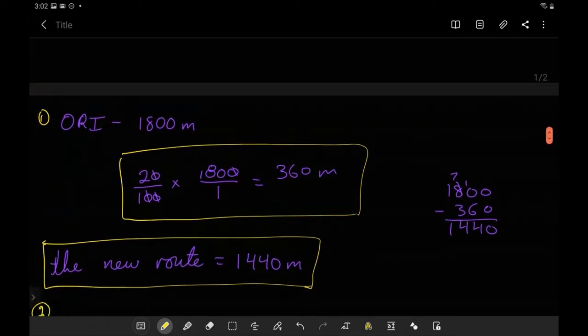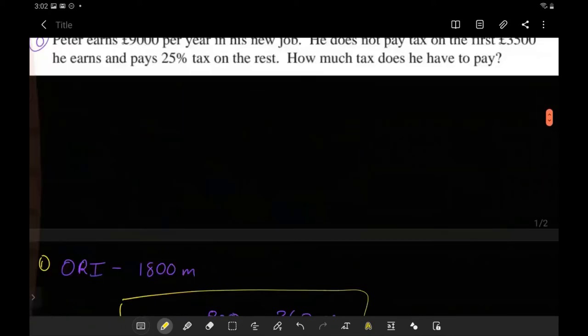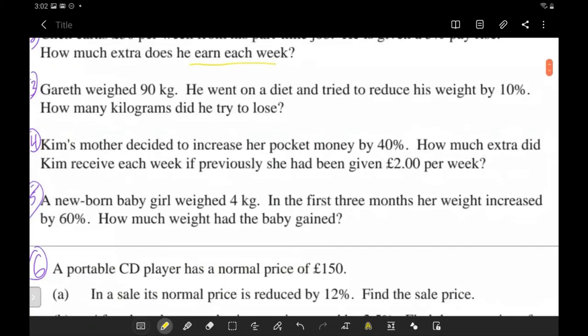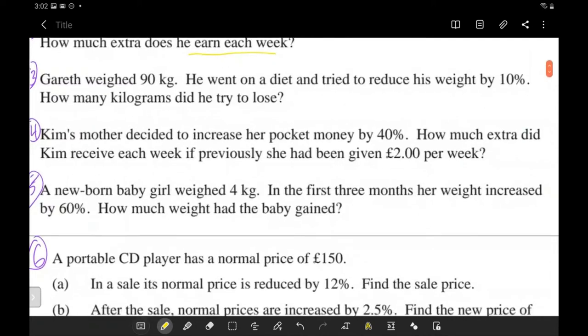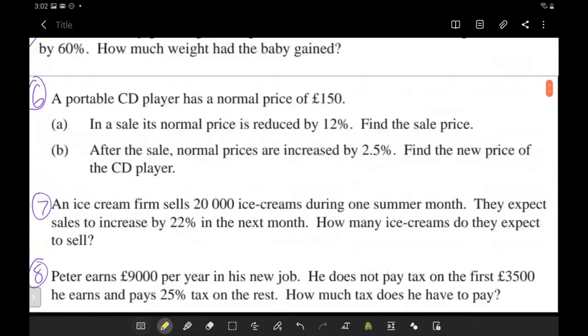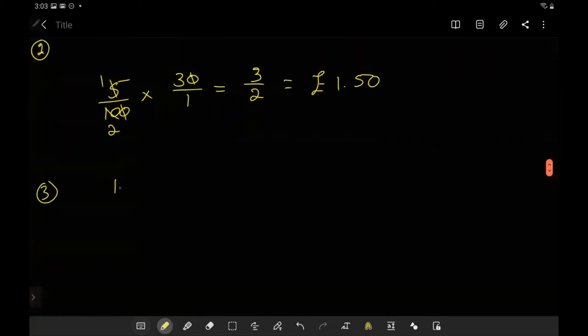Number three asks how much he tried to lose, so that's just 10 percent of 90, which is 9 kilograms. He tried to lose 9 kilograms. Units are very important, so don't forget them.